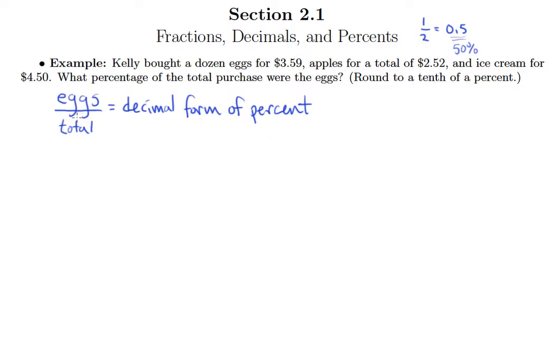So when I take eggs divided by the total, I'll get the decimal form of the percent or the decimal form of the answer that I want to give. So to figure this out, I'm going to need to find the total, which means just add up the different purchases. When I do, I end up with $10.61.